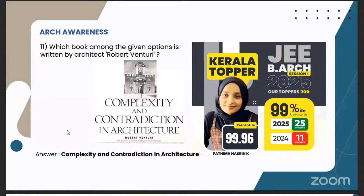We have another question related to architects and books: which book among the given options is written by architect Robert Venturi? This exact question was in our model exams. The answer is 'Complexity and Contradiction in Architecture' — that is the book written by architect Robert Venturi. Not only this question, but most — I think 40-plus questions out of 50 were exactly the same as we had in our model exam. Students were really happy, sharing their experience: 'We had that question, we had this question, that one we discussed in class.' We were so happy hearing your reviews.